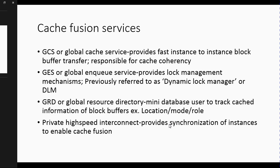The next Cache Fusion service is the Global Resource Directory. Basically it's a mini-database located on each instance, on each node. What it does is store information on the block buffers — such as the location, the mode, or the role. The last global service is the Partitioned Region technique, which provides synchronization of instances and therefore allows for interaction with Cache Fusion. That's the basis of Cache Fusion — all those nodes can be synchronized at the same time and can share all the different resources.